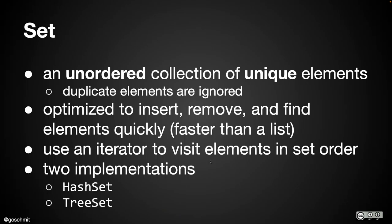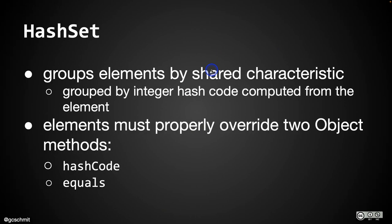We don't make a set directly — we choose to make either a HashSet or a TreeSet; those are the two specific classes. Which one we make depends on our requirements. A HashSet is our preferred option because it's faster of the two. There is an order to it — it's based on hash codes — so it's not random, but it's not necessarily useful to us either.